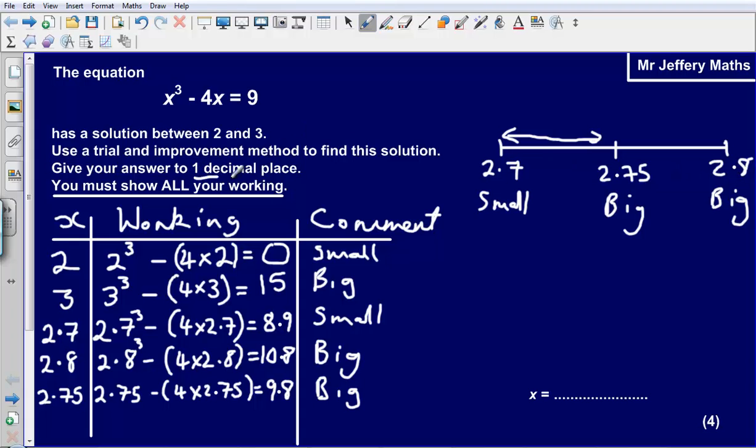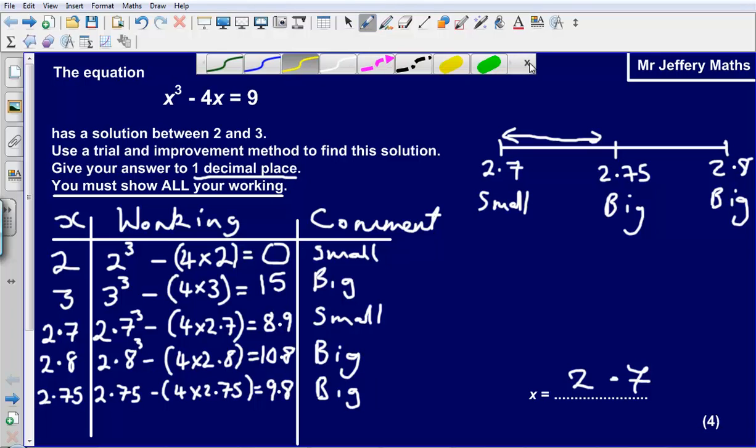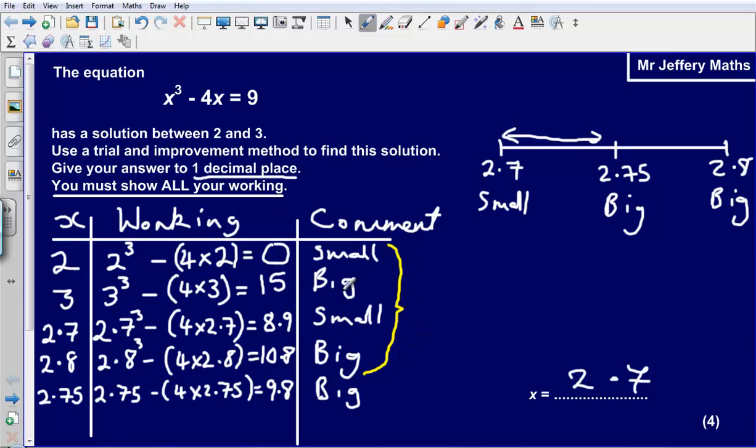So our answer to one decimal place will simply be 2.7. Let's quickly go over what we would get marks for in a GCSE exam. So you would get 2 marks for correctly evaluating two values between 2 and 3. So this bit here gets us 2 marks. We would get a third mark for this value in between 2.7 and 2.8. And then we would get our final fourth mark for a correct decision. Just to reiterate here, you do not get any marks just for writing down 2.7 because it asks you to show all of your working. If you were just to write 2.7 in this box here without any of this, you would get zero marks.